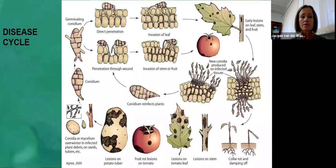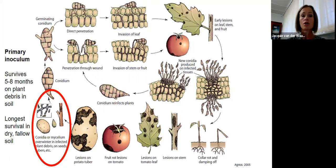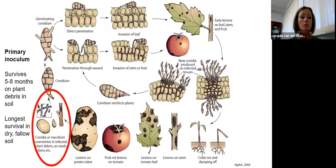Looking at the disease cycle: for any pathogen it's important to understand where critical points are for applying management strategies. The primary inoculum of both Alternaria species is conidia or mycelium that overwinters in infected plant debris, on seeds, on tubers left in soil, or on alternative hosts. The primary inoculum survives longest in dry fallow soil — so it's not good to have a lot of dry fallow soil between potato seasons. In general, primary inoculum will survive five to eight months on plant debris in the soil.